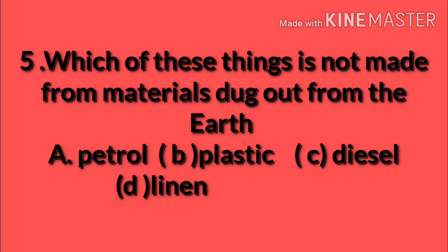Fifth MCQ: Which of these things is not made from materials dug out from the earth? Petrol we get from the earth, plastic is also made from petrol, and diesel is also a form of petrol. So linen is the material which is not dug out from the earth.